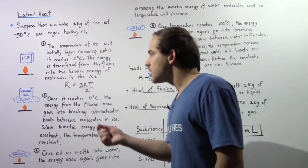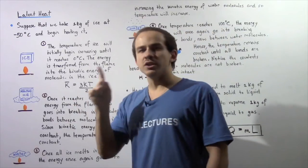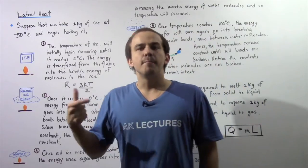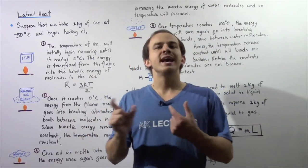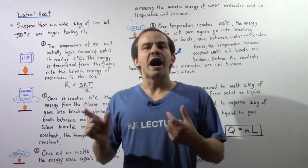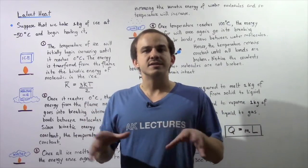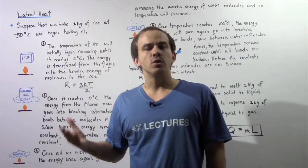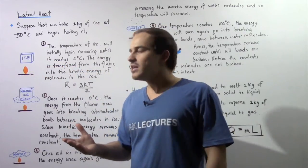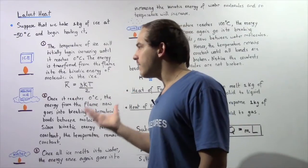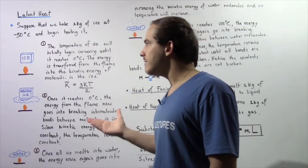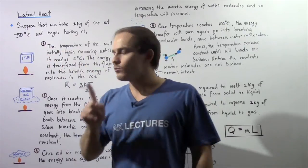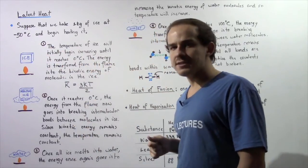Because kinetic energy is related to temperature by the following formula, as the molecules gain more kinetic energy, they will vibrate more violently. And that means collectively, the overall temperature will also begin to increase. So, as we take the block of ice and place it over the flame, the temperature will begin to increase until it reaches zero degrees Celsius.